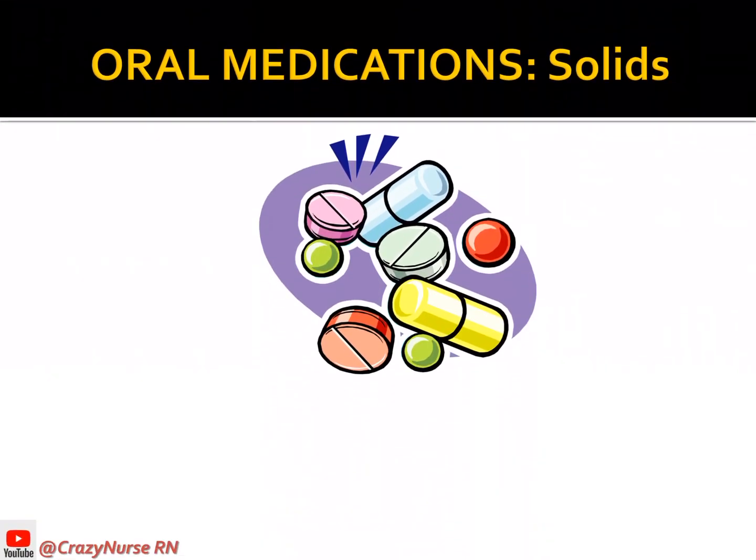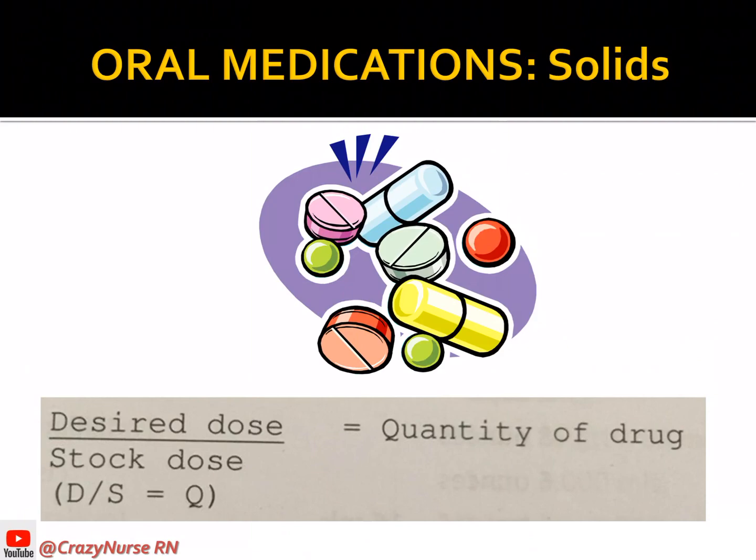For oral medications in solid form, the formula is: desired dose over stock dose equals quantity of drug. The desired dose is the physician's order; the stock dose is the drug strength on the label; and the quantity of drug is the amount — in tablets or capsules — you will administer to the patient. In simplified form: D over S equals Q.